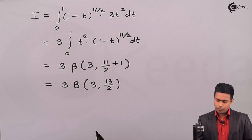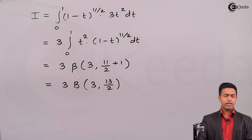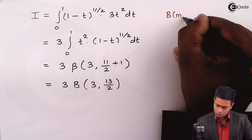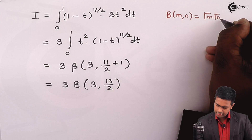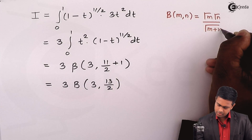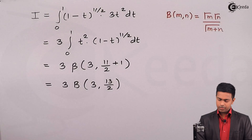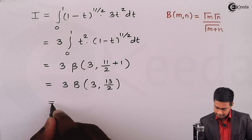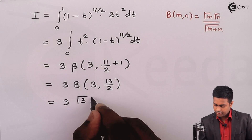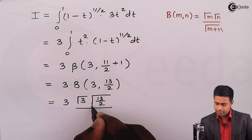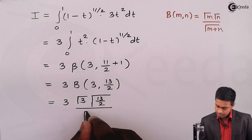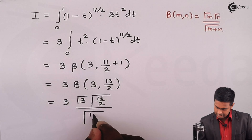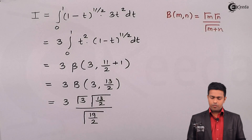To solve β(3, 13/2), we use the relationship between beta and gamma functions: β(m, n) = Γ(m)·Γ(n) / Γ(m+n). Applying this relationship, we get: 3 · [Γ(3) · Γ(13/2)] / Γ(3 + 13/2), and 3 + 13/2 = 19/2, so the denominator becomes Γ(19/2).